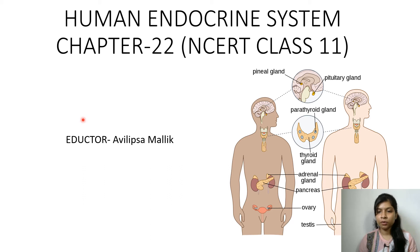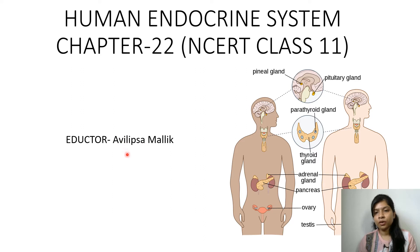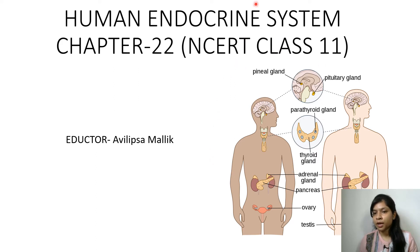Hello everyone, this is Ablev Shamalik. In this video tutorial we are going to discuss chapter 22 in CRT Class 11 Biology — the human endocrine system, which is a part of the human coordination and control unit. I am an educator in biology and this video is recorded for educational purposes. The topic is the human endocrine system.